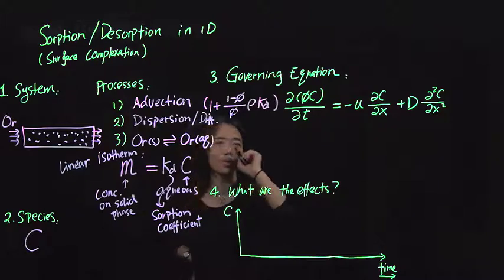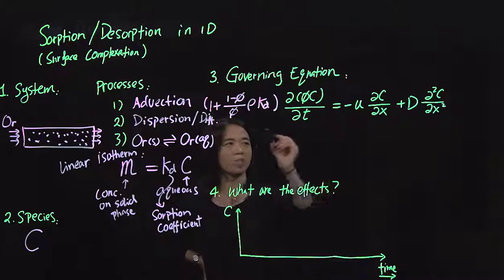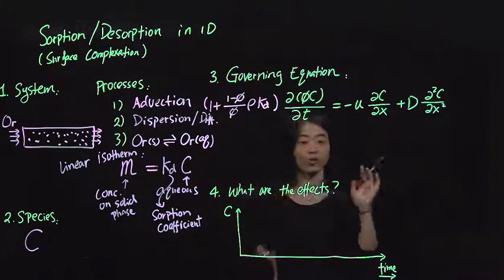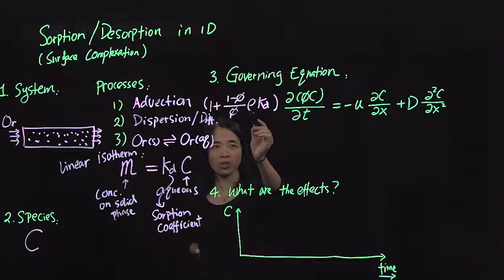So you imagine that for each term, the units need to be consistent. So this is dimensionless. These should be, the units of these should cancel out.